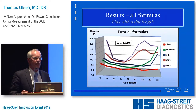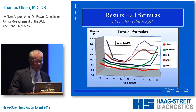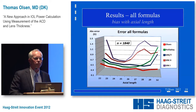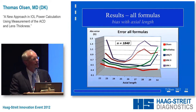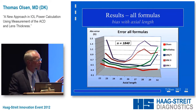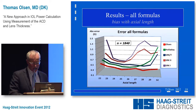Comparing with other formulas: we have the SRK1 — I don't recommend that formula for even my worst friend — the SRK2, the SRKT, the Holladay, and our own approach. Our approach was performing very well over the entire axial length. The short eyes remain a challenge because all the measurement errors add to a larger refractive error in those eyes, but the long eyes are doing quite well.